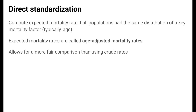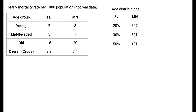These expected mortality rates are called age-adjusted mortality rates, and they give us a more fair comparison of mortality than crude rates do. Let's look at an example of how direct standardization works. Suppose that we're comparing the crude yearly all-cause mortality rates in Florida and Minnesota. Florida has a higher crude mortality rate than Minnesota: 9.9 deaths in one year per 1,000 population versus 7.1.